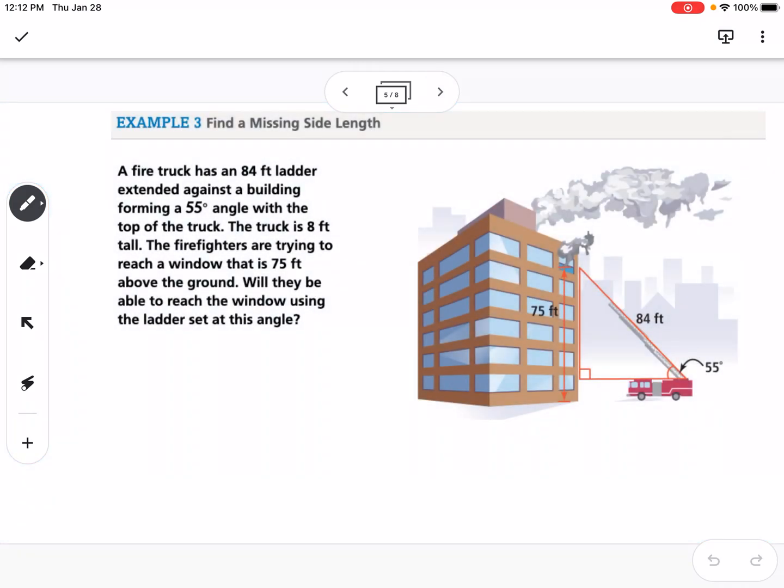Example three is a real-life problem. A fire truck has an 84-foot ladder extended against a building forming a 55-degree angle with the top of the truck. The truck is 8 feet tall. The firefighters are trying to reach a window that is 75 feet above the ground. We basically need to find out if 8 plus this length will reach the window.